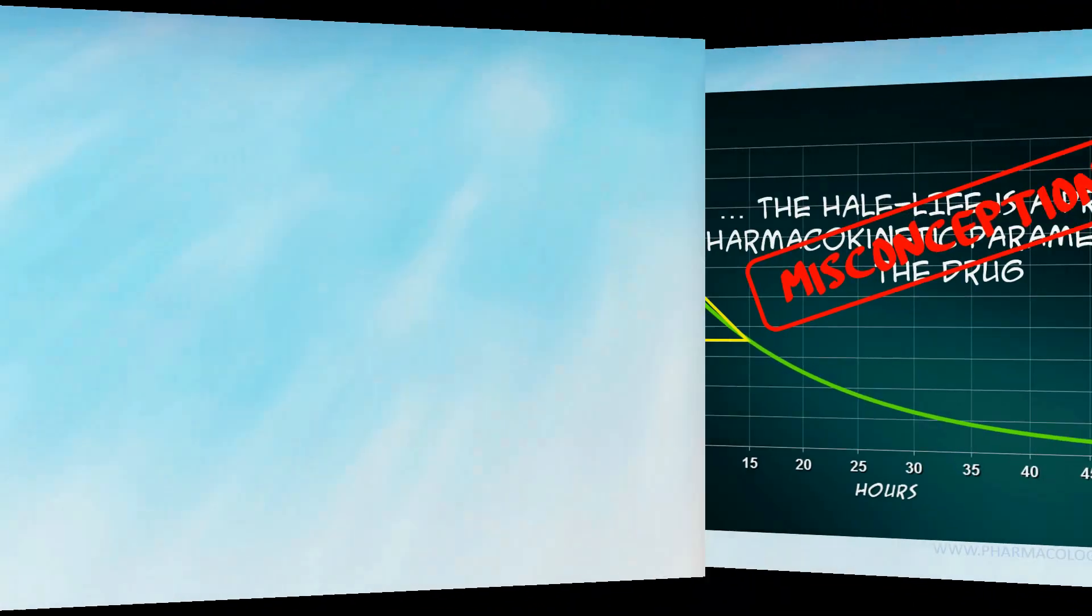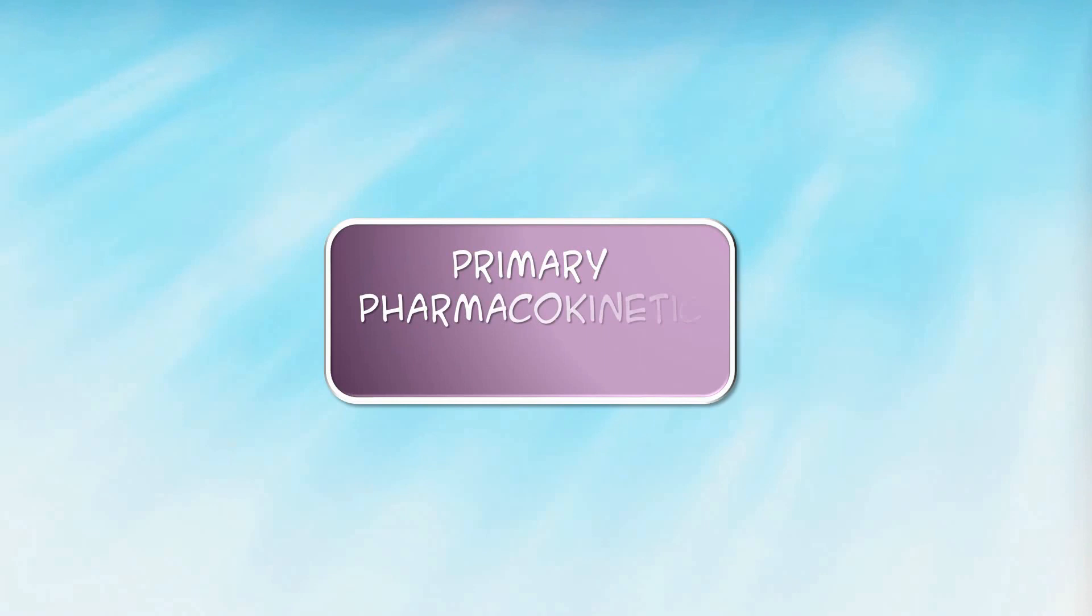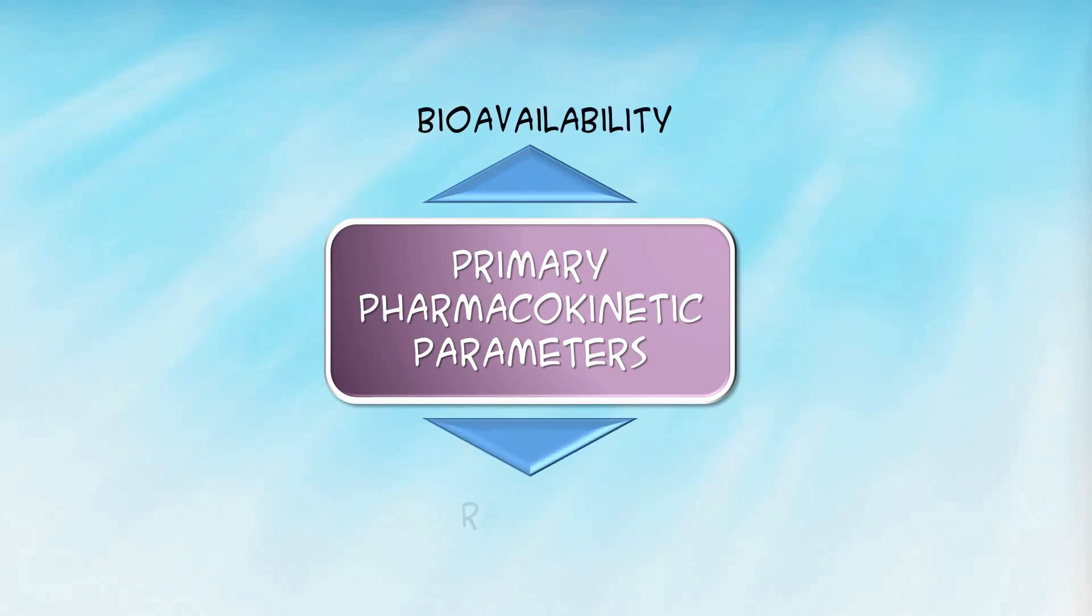The primary pharmacokinetic parameters are those that are directly a consequence of a physiological or metabolic process. The primary pharmacokinetic parameters usually are recognized to be bioavailability, rate of absorption, volume of distribution, and clearance.